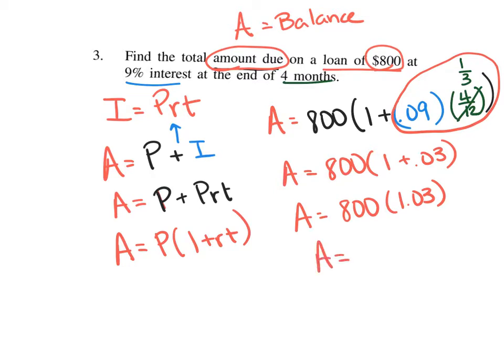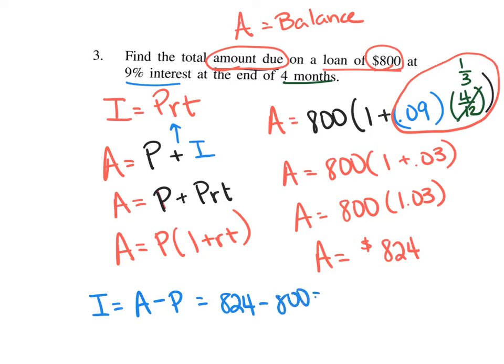A in the end is equal to $824. So the final amount you're going to pay is $824. How much are you actually paying in interest? You had to pay back $800, but on top of that you paid an additional $24. To find the actual interest, you calculate I equals the ending balance A minus your principal P, which is $824 minus $800, and that equals $24 in interest.